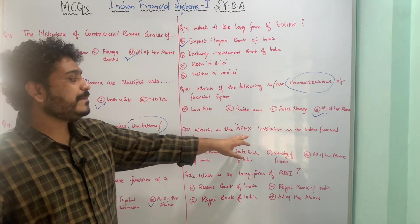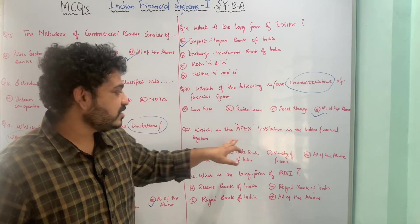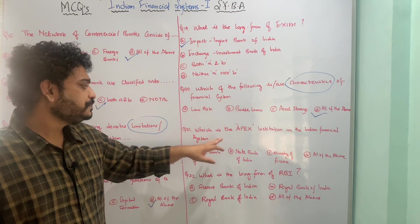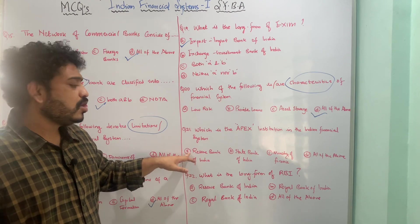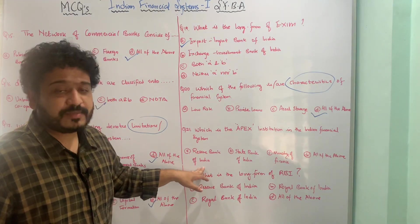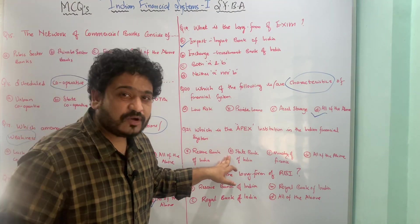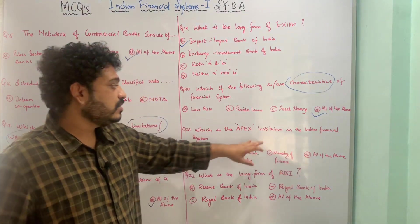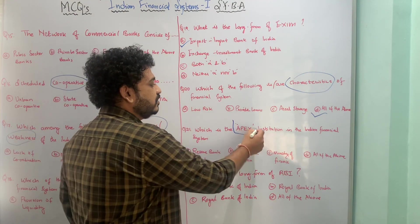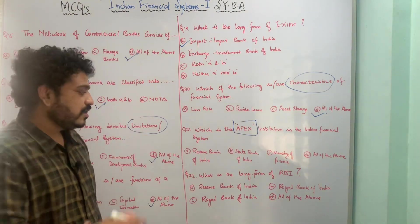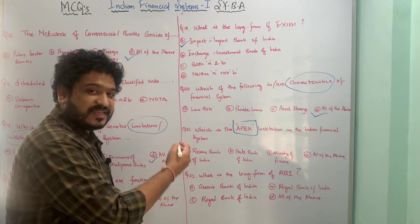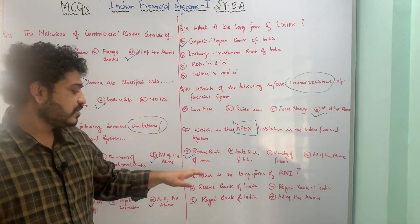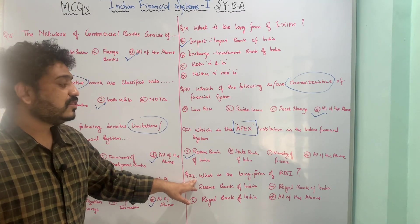The next MCQ asks: which is the apex institution in the Indian financial system? The options are: A — Reserve Bank of India, which is also the Central Bank of India, B — State Bank of India, C — Ministry of Finance, and D — all of the above. The apex institution, meaning the central bank of India, is the Reserve Bank of India, option A.